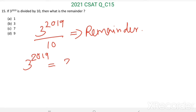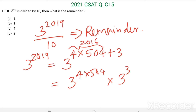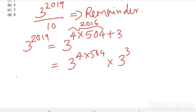3 power 2019 can be written as 3 power (4 × 504), which equals 2016, plus 3. So this becomes 3 power 4 to the 504, into 3 power 3. And 3 power 4 equals 81, so we have 81 power 504 into 3 power 3.